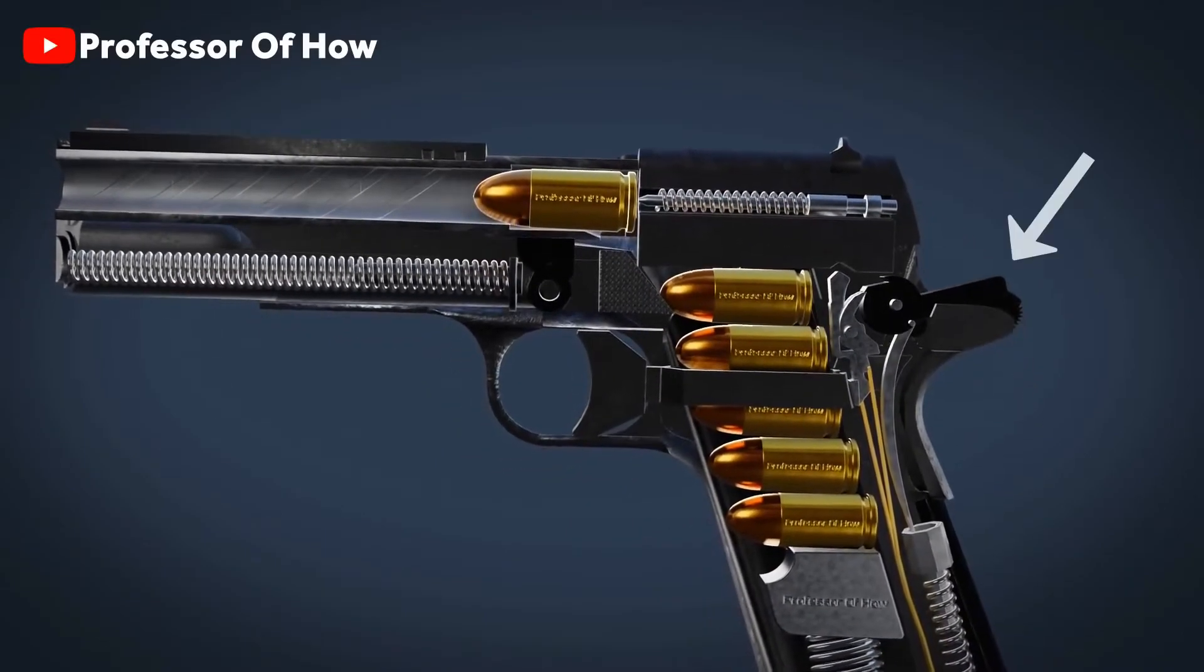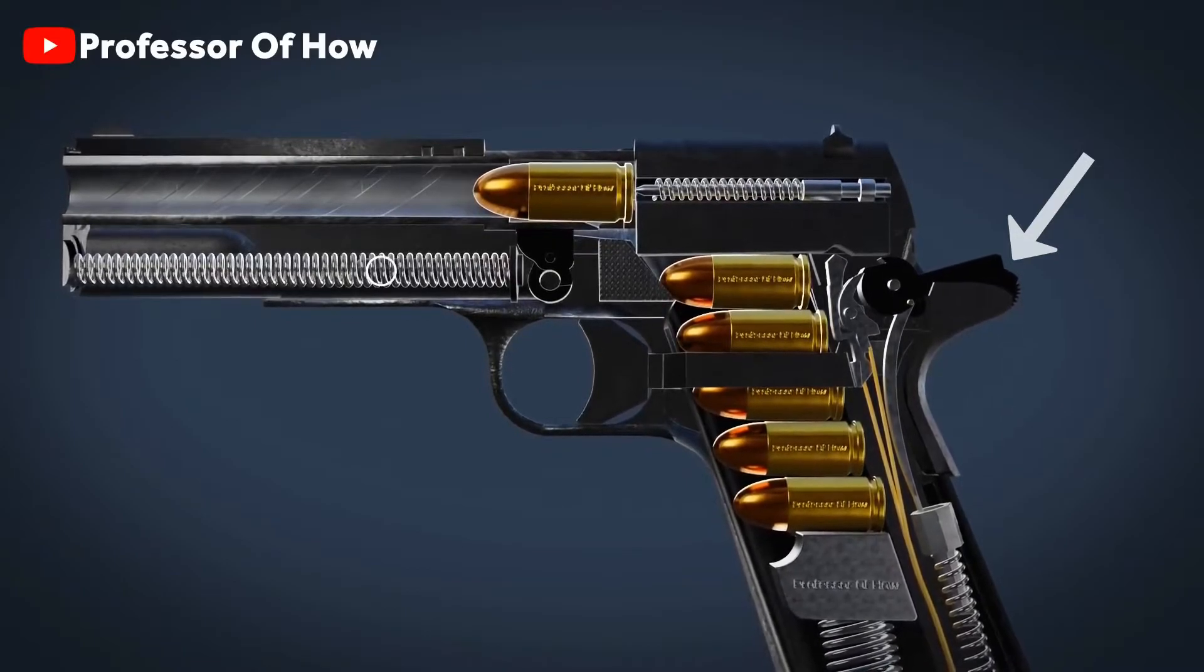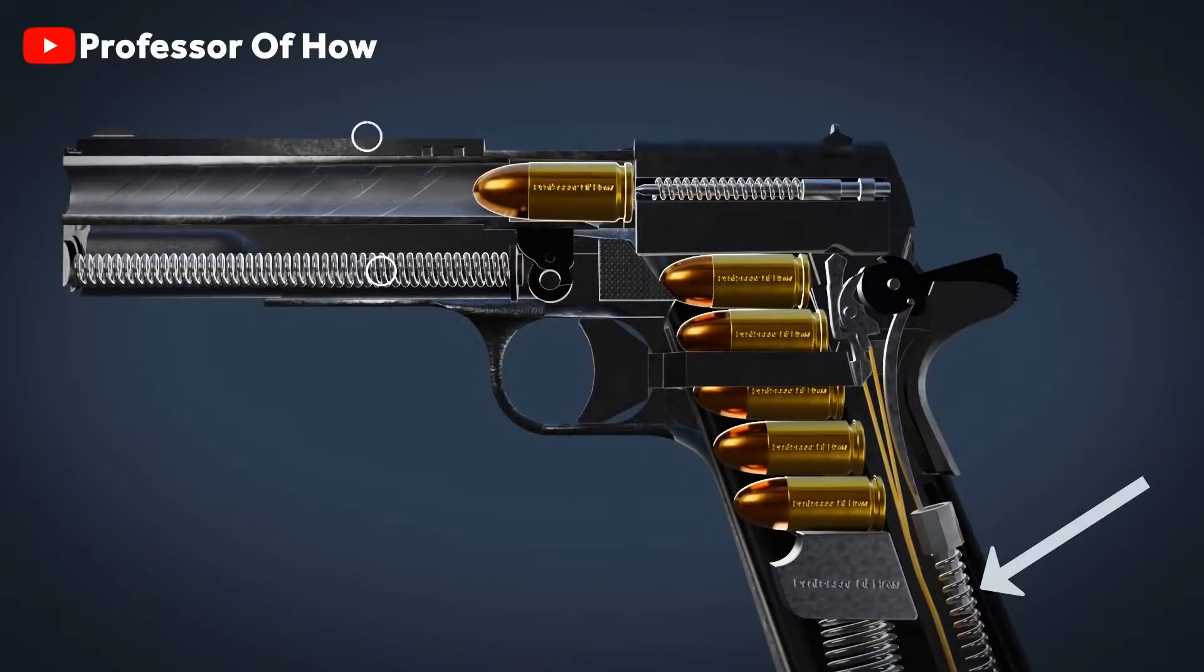But did you notice a thing? Hammer should also retain its initial state because of main spring, when slide retained its rest state because of recoil spring. But that didn't happen.